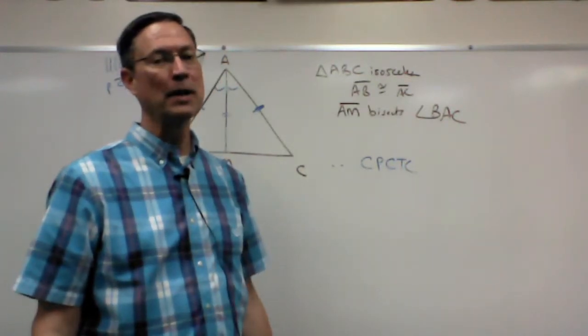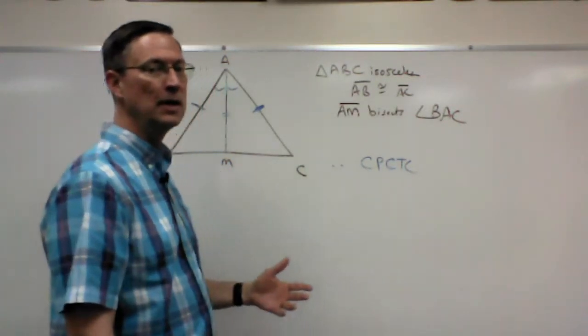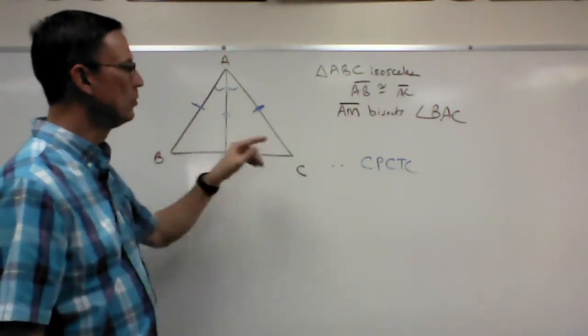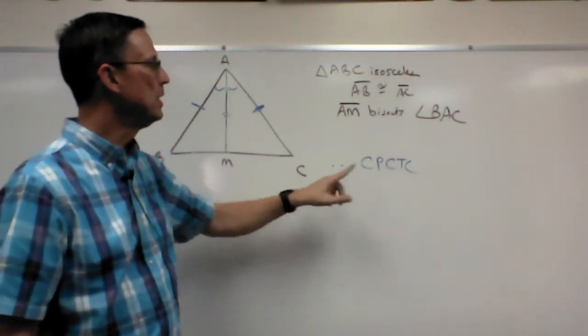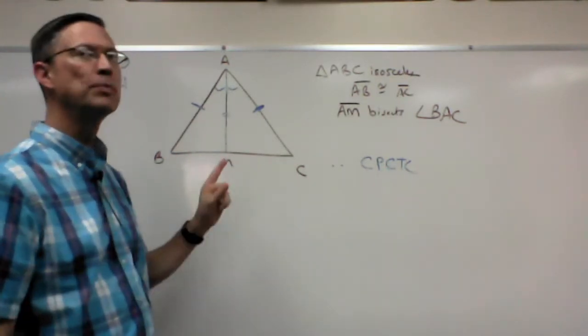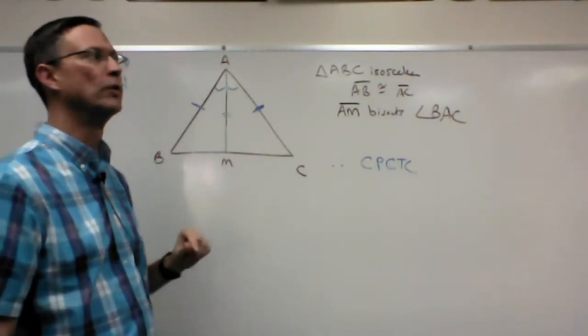And just think about that just for a second. What does that mean again? That means that if I have congruent triangles, okay, then the corresponding parts, I should say, the corresponding parts of congruent triangles are congruent. There we go.